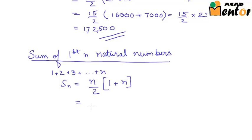Hence this becomes n plus 1 into n by 2. Now this is another relationship that you might want to remember. The sum of first n natural numbers is n into n plus 1 by 2.